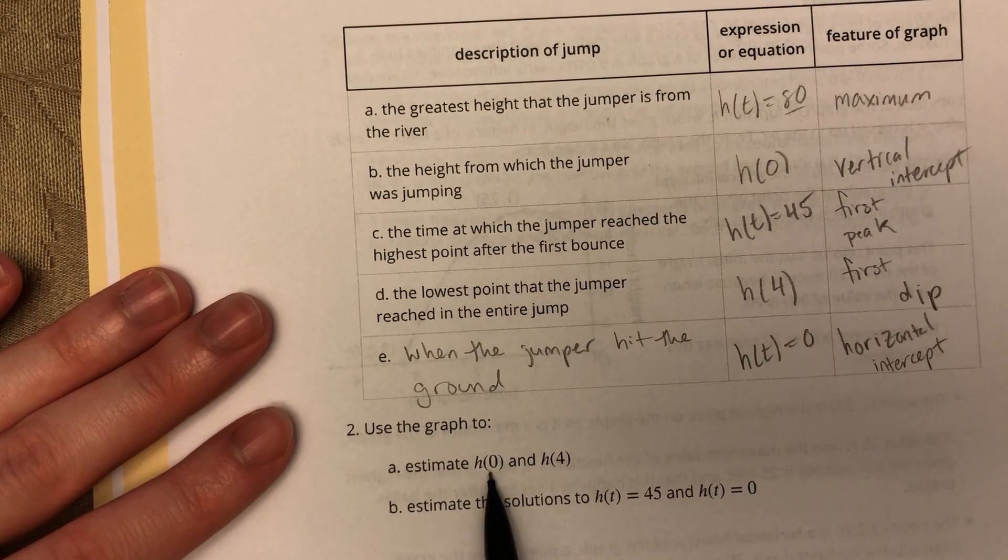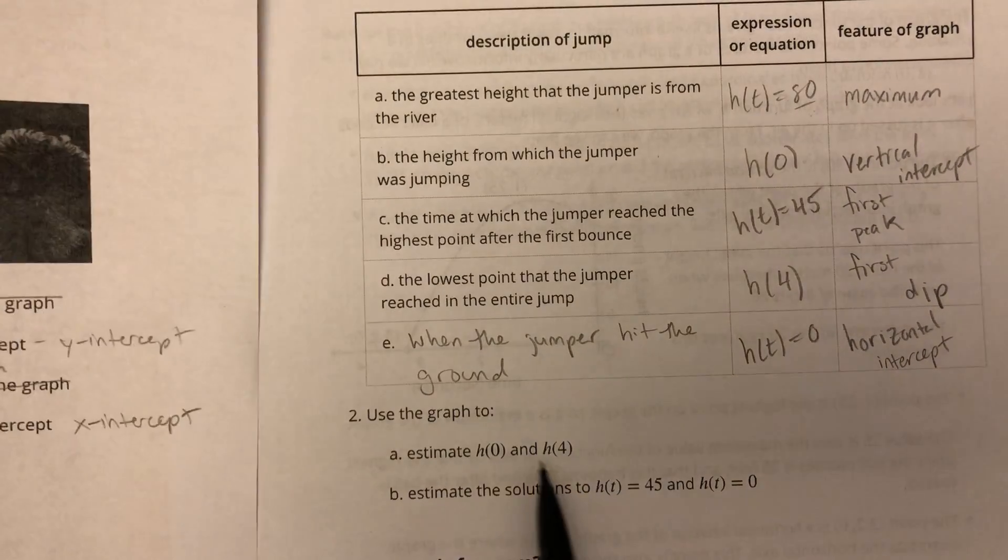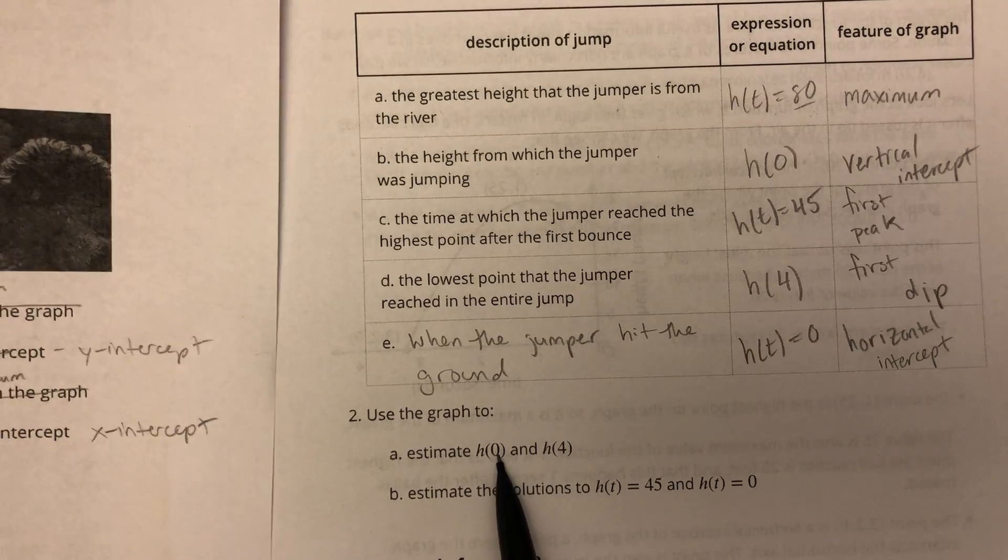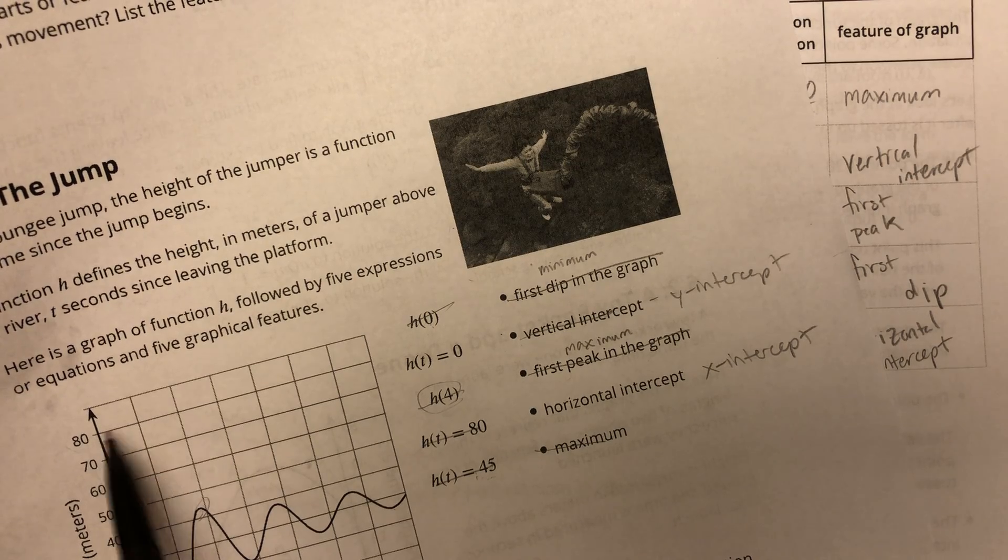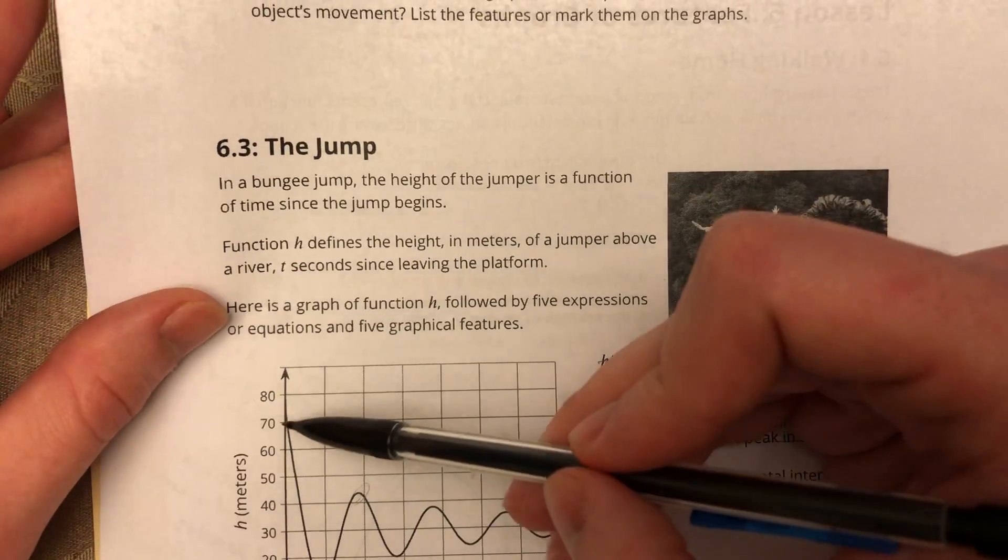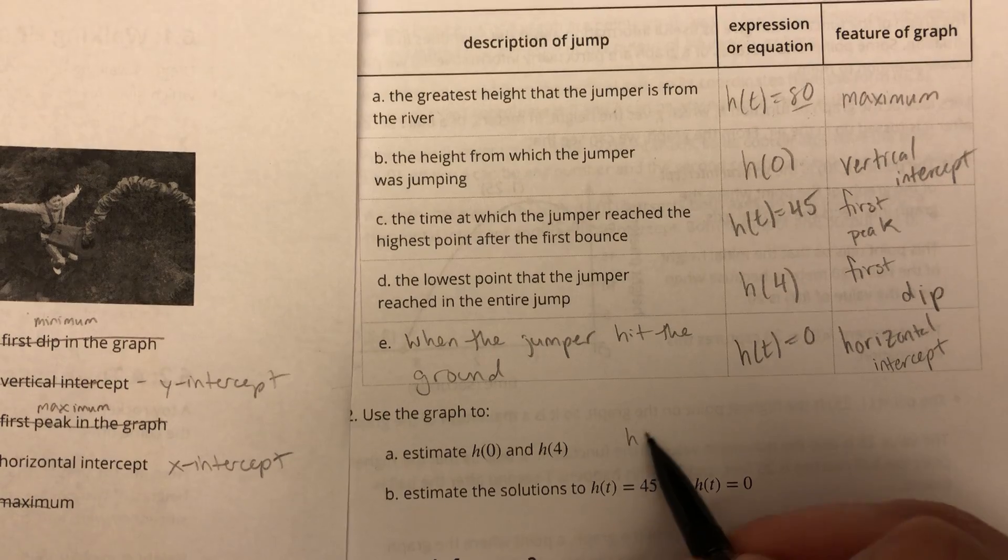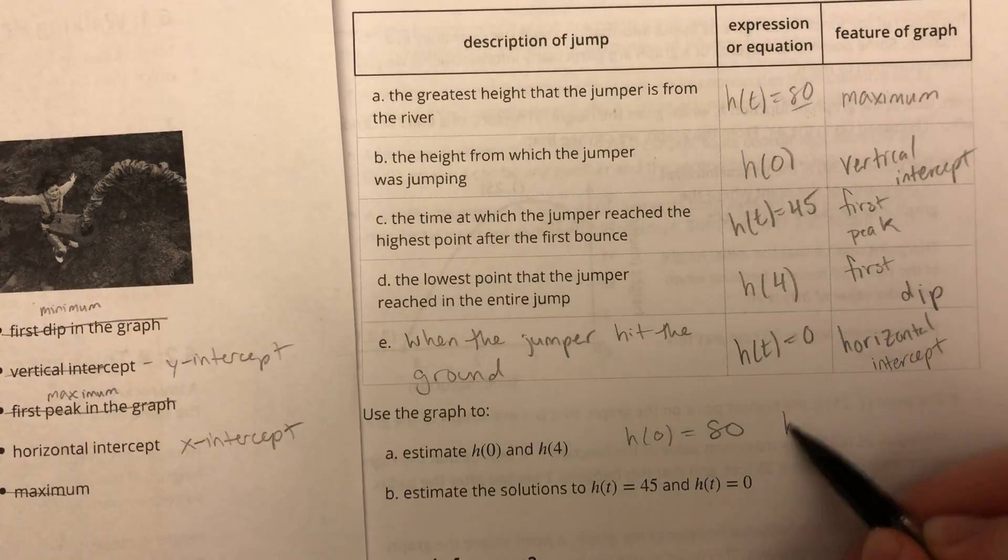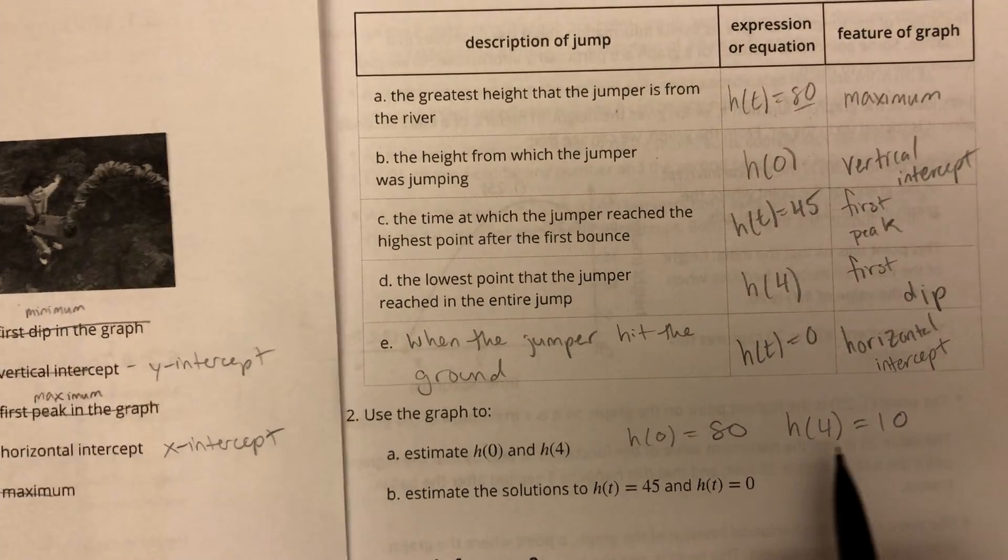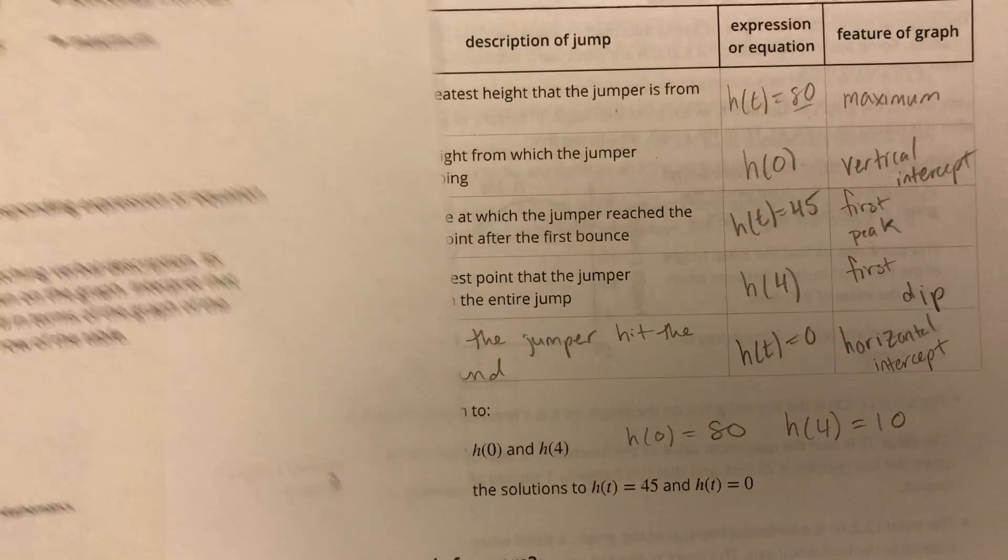Use the graph to estimate H of zero and H of four. Okay. So let's see, H of zero, that's when X is zero. So if I'm looking at that, I would say that that looks like it's about, that looks like it's about 80 to me. I feel like it's very, very close and I see kind of see a little bit of black right here. So I'm going to guess 80. Alright. H of four. Oh, we've talked about that earlier. We said H of four looks like it's at about 10. Alright. That's four seconds. So four seconds is like right about here. It looks like it's about 10.